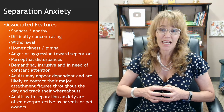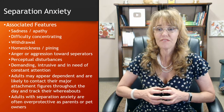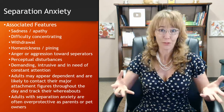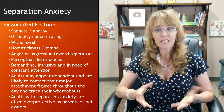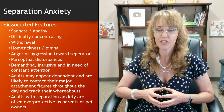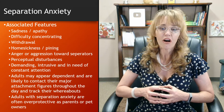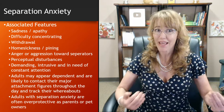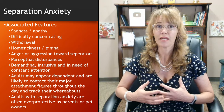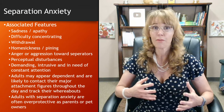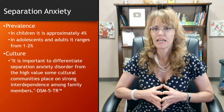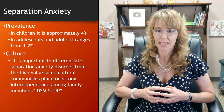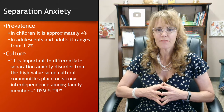Children with separation anxiety tend to be described as demanding, intrusive, and in need of constant attention. Adults may appear dependent and are likely to contact their major attachment figures throughout the day and track their whereabouts. They are also often overprotective as parents and pet owners — the DSM even mentions that the person may be excessively concerned about knowing where their pet is at all times. The prevalence of separation anxiety in children is approximately 4%, and in adolescents and adults 1–2%. The DSM also noted the importance of differentiating it from the high value some cultural communities place on strong interdependence among family members.